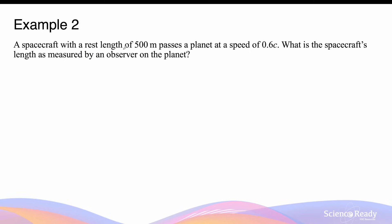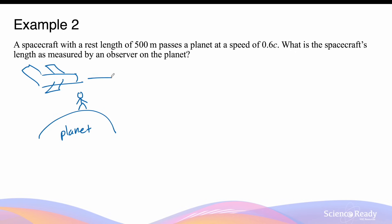A spacecraft with a rest length of 500 meters passes a planet at a speed of 0.6c. What is the spacecraft's length as measured by an observer on the planet? We have a stationary observer on the planet and a spacecraft going past at a speed of 0.6c.